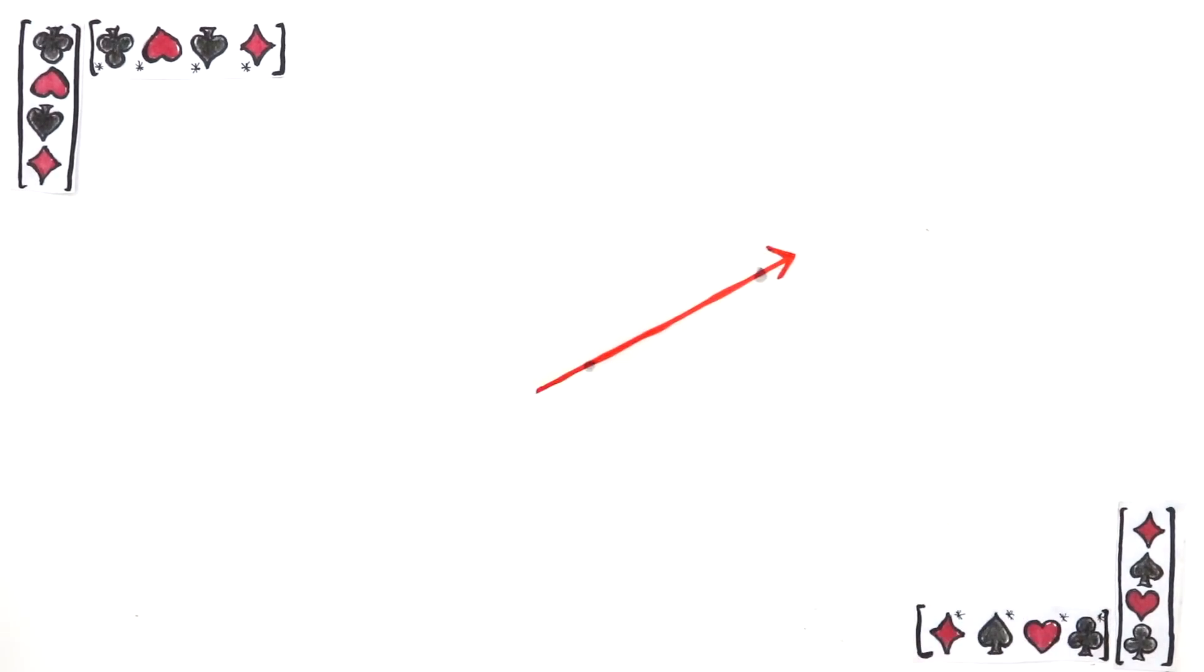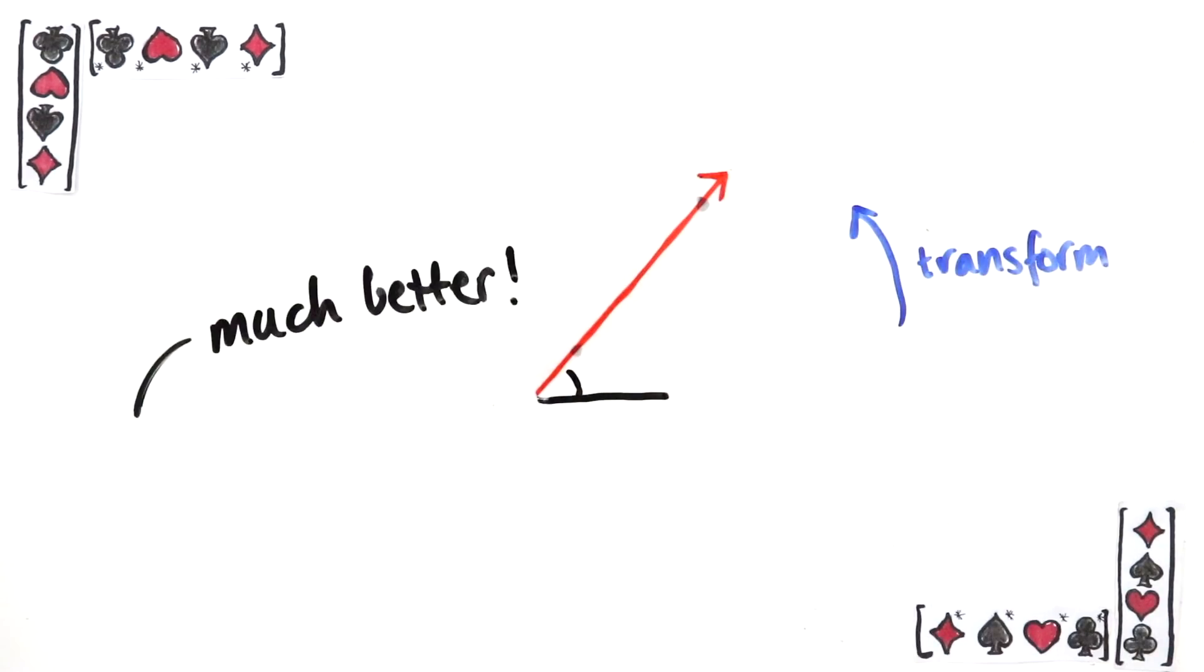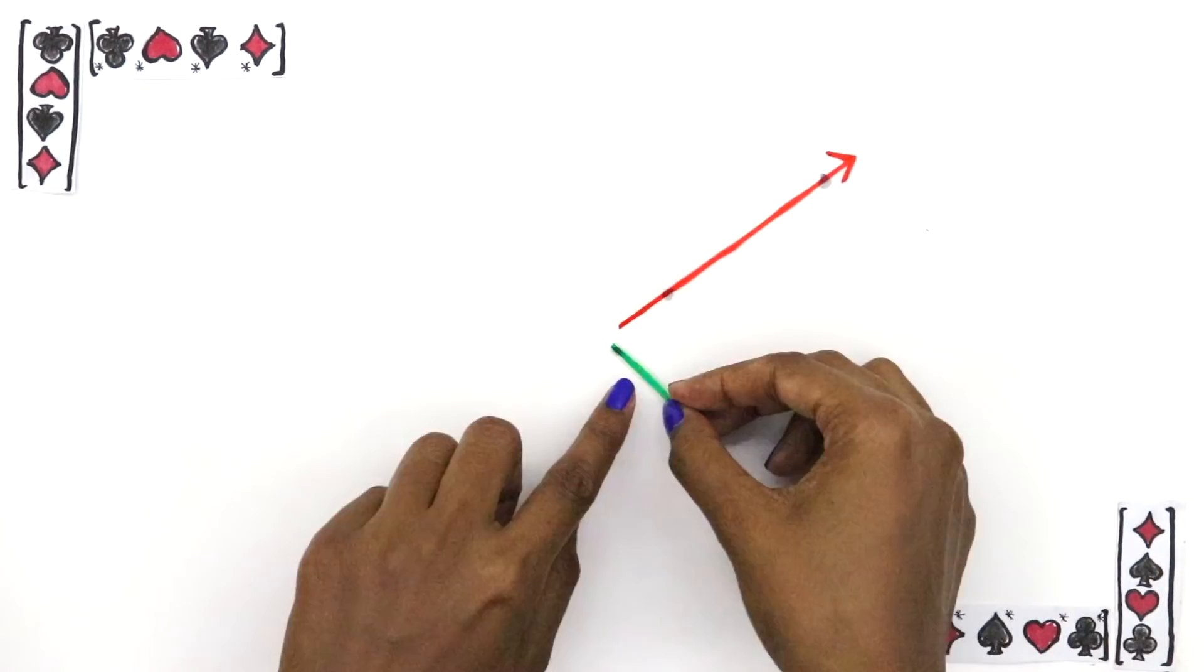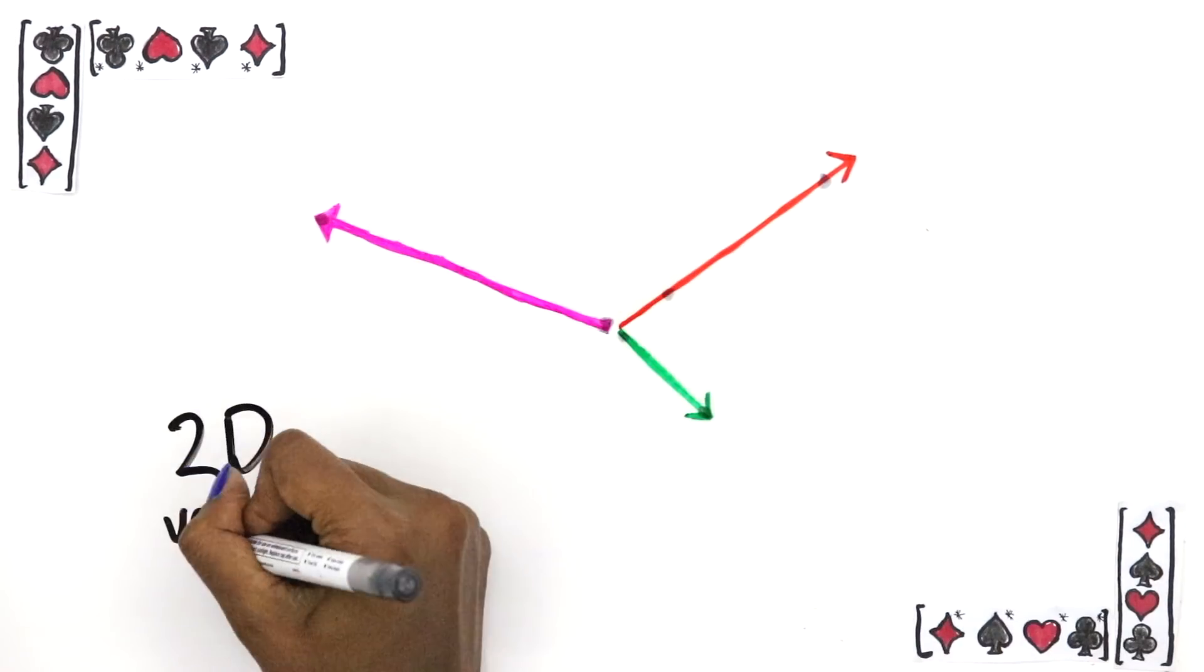Remember vectors from last time? Well, imagine you have some vector and you want to transform it into some other vector instead. In fact, say you have some whole vector space, let's say all the vectors in 2D space,